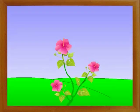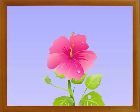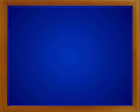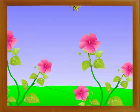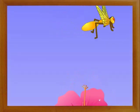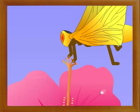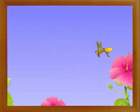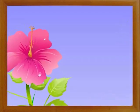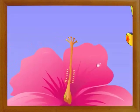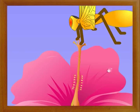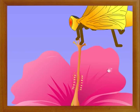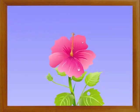In self-pollinating plants, there is no possibility of new characters. However, in cross-pollinating plants, there is possibility of bringing in new characters as the male gamete of one plant combines with the female gamete of another plant to form the zygote.